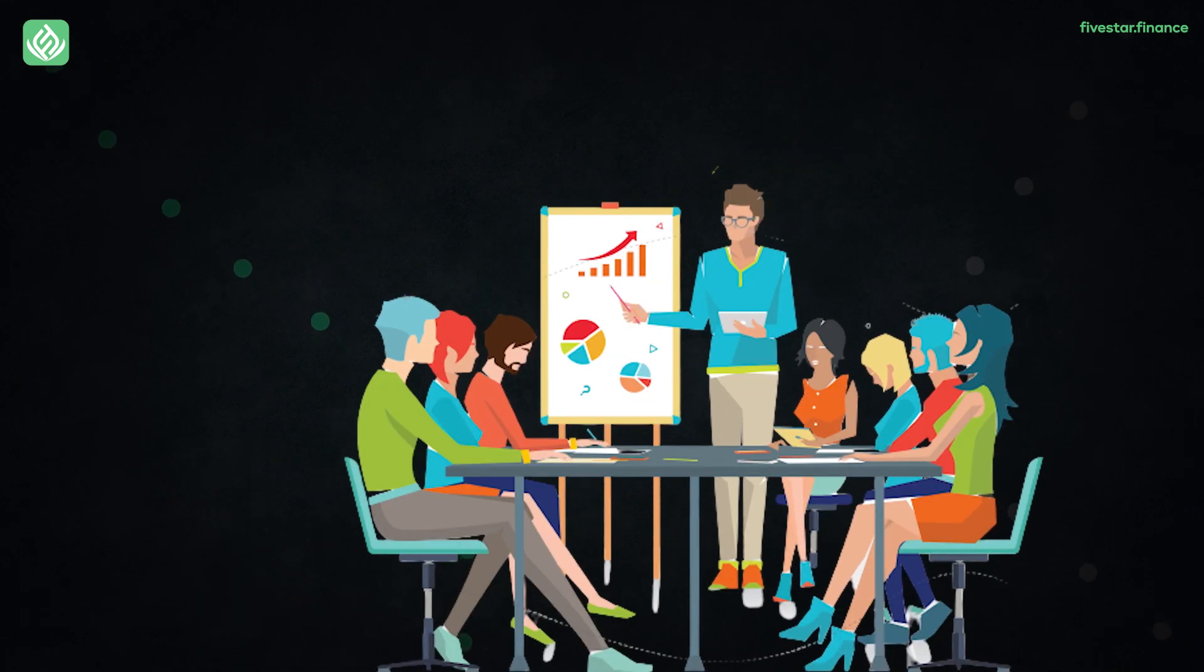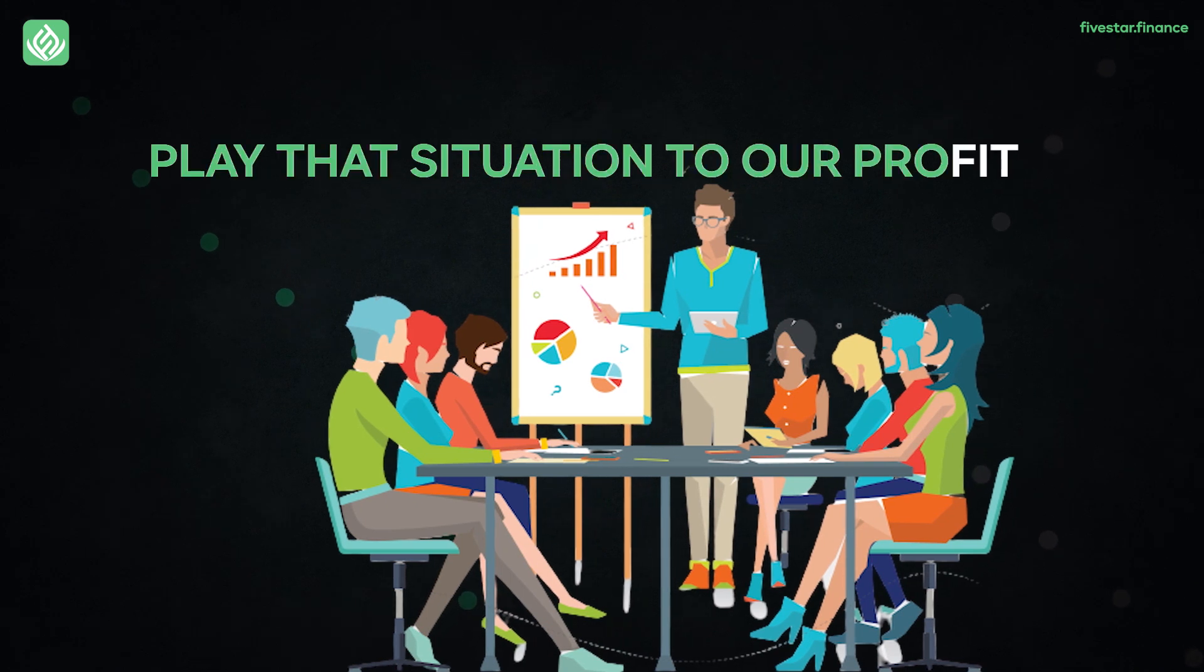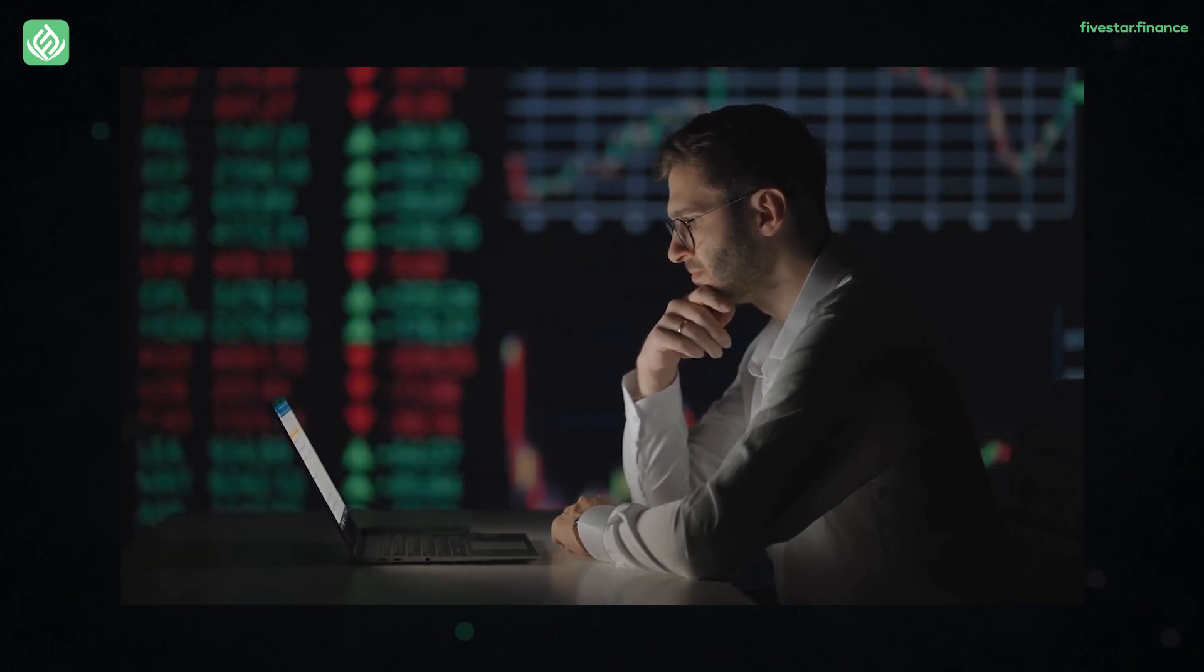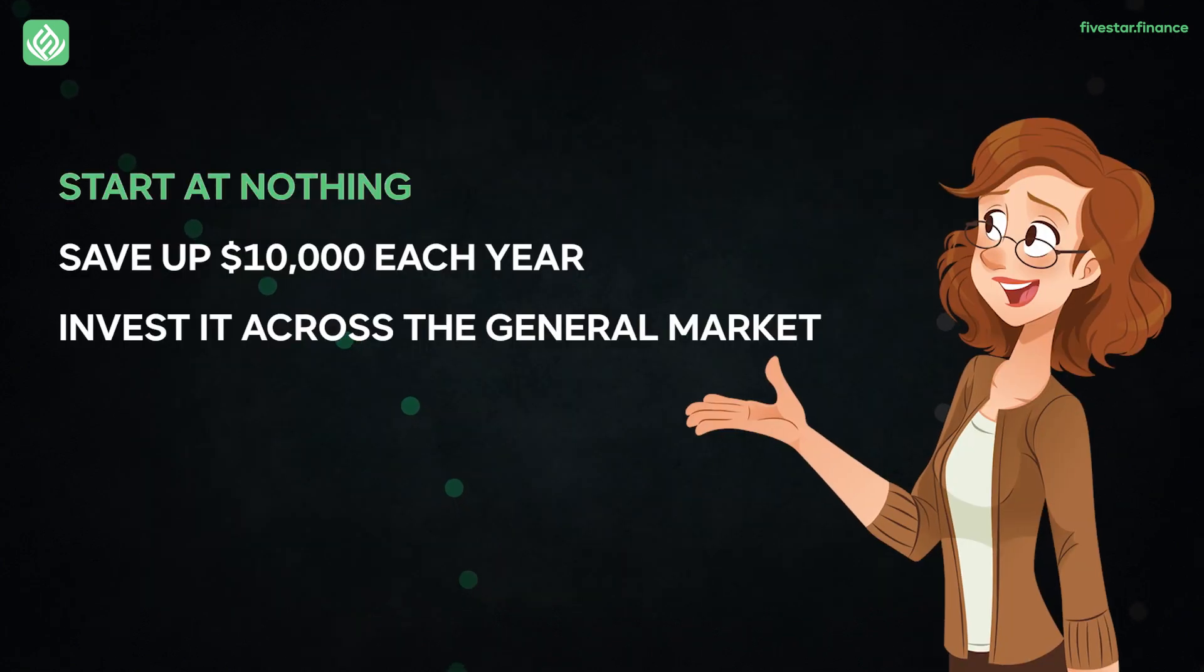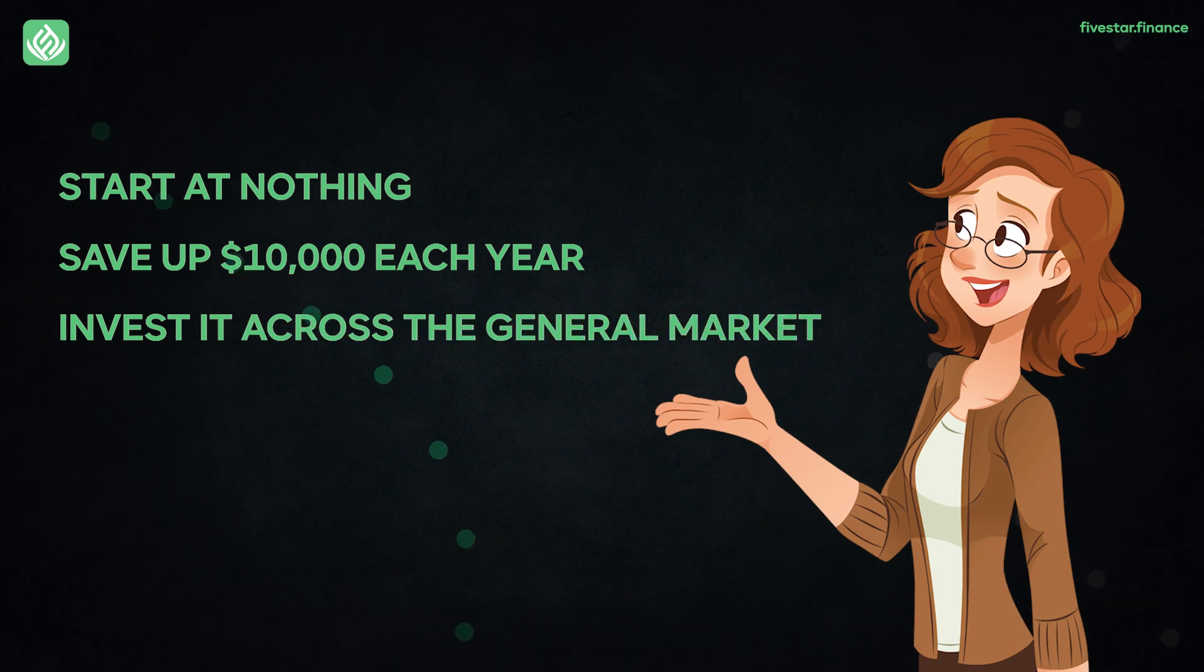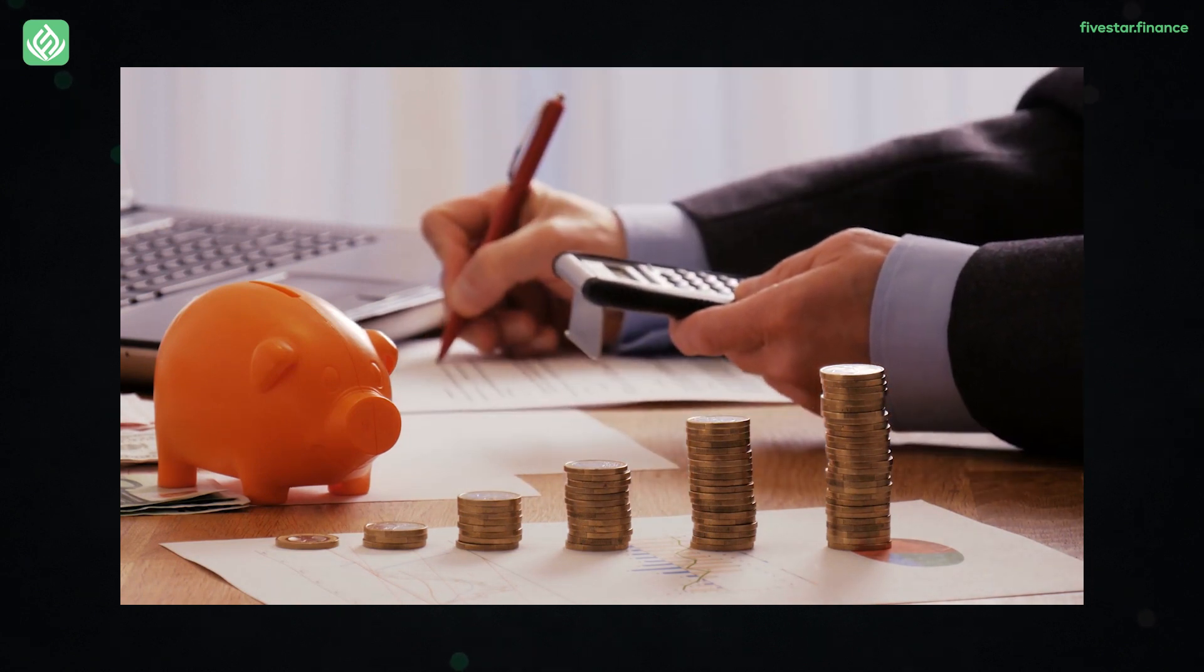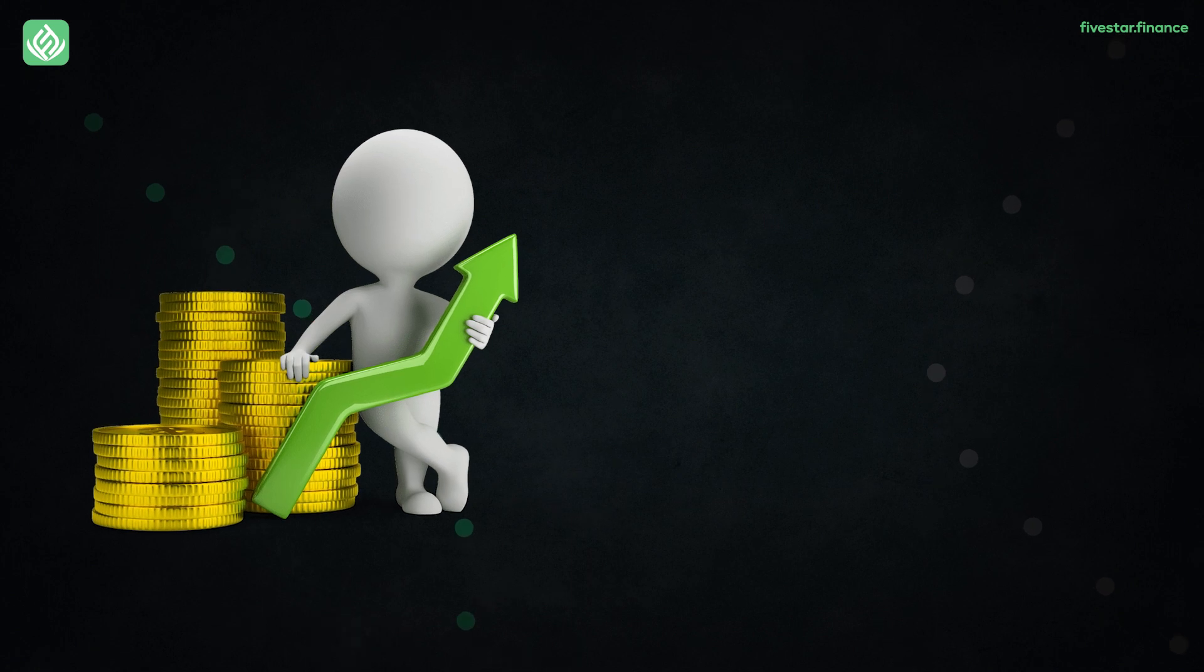So what we want to do to achieve financial freedom through stocks is play that situation to our profit. We can take that 7% average rate of return as a benchmark figure and plan all of our investments around that and see where it gets us. Start at nothing, save up $10,000 each year and invest it across the general market. When you're adding $10,000 every year, then after 10 years, we can say that you will have a figure of $100,000 to support your investments.